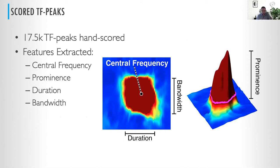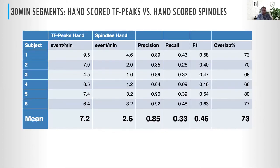From all of these TF peaks, we automatically extracted features such as the central frequency, the peak frequency at the maximum point, the prominence — the height relative to baseline — and the duration, which is how long it lasts, and the bandwidth. So we were able to get all of these features and compare the hand-scored TF peaks to the hand-scored spindles on these DREAMS databases.